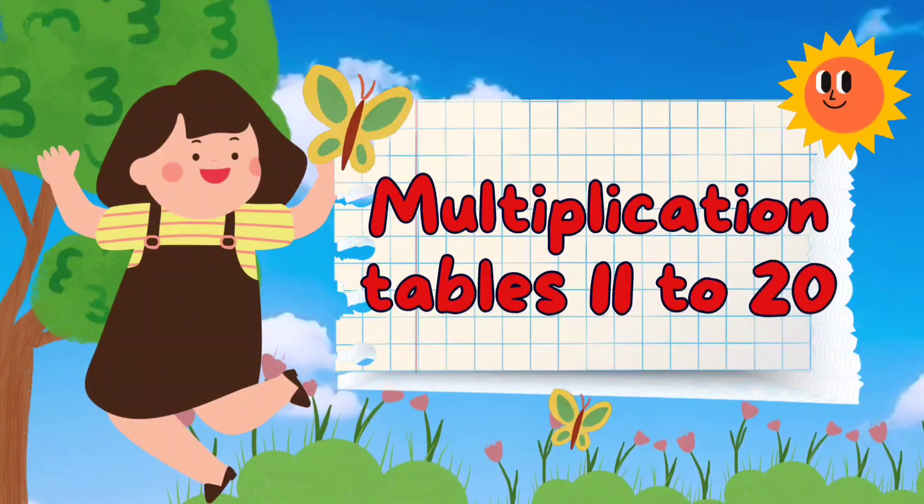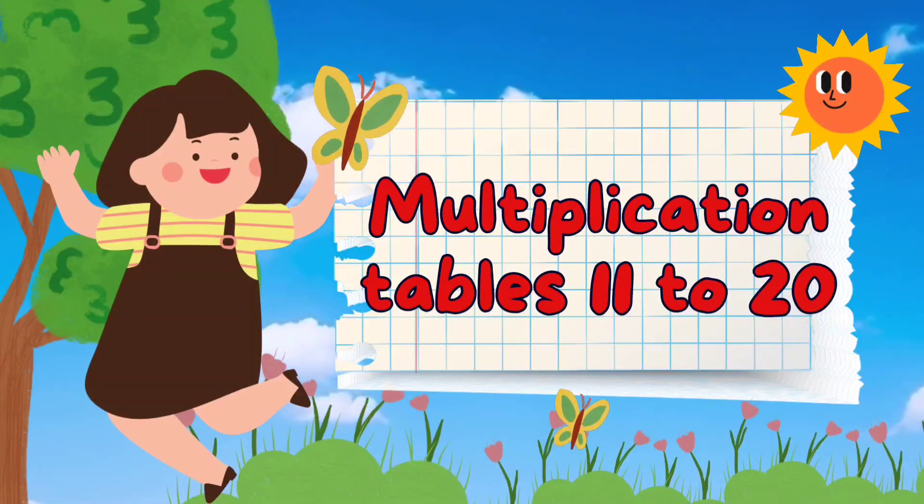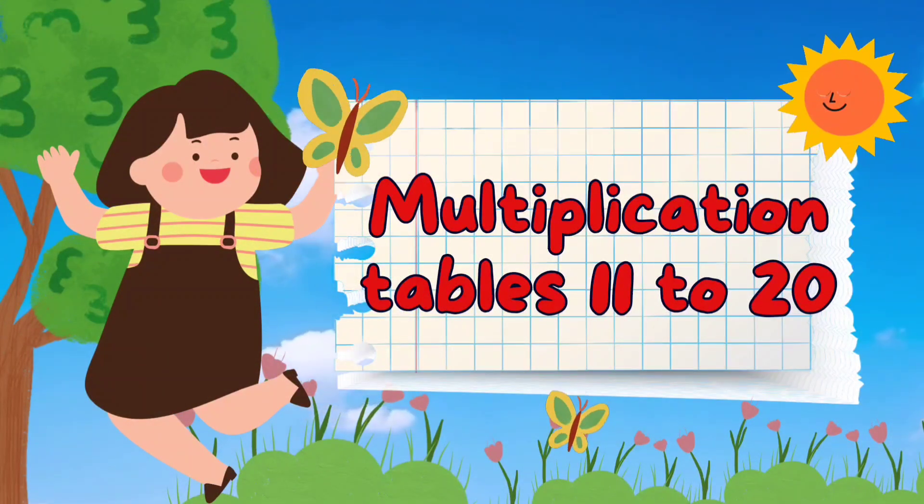Let's learn multiplication tables 11 to 20. Table of 11: 11 ones are 11, 11 twos are 22, 11 threes are 33, 11 fours are 44, 11 fives are 55, 11 sixes are 66, 11 sevens are 77, 11 eights are 88.